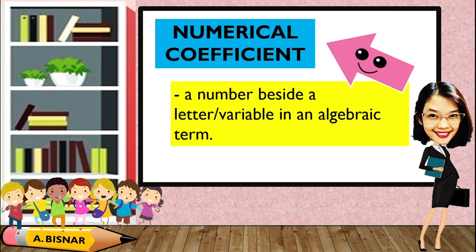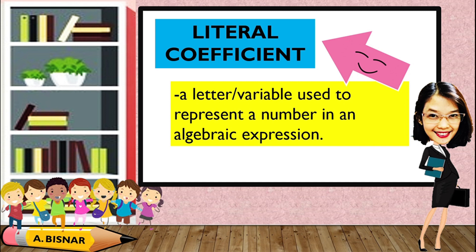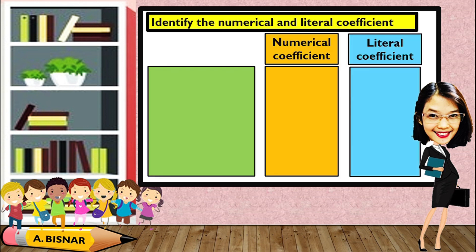Next, let's identify the numerical coefficient. A numerical coefficient is a number beside a letter or a variable in an algebraic term, while a literal coefficient is a letter or variable used to represent a number in an algebraic expression. For number one, 3a: the numerical coefficient will be 3 and the literal coefficient will be a.